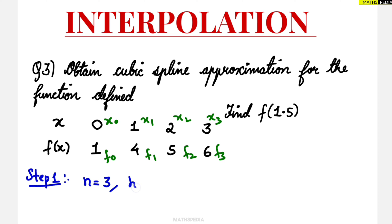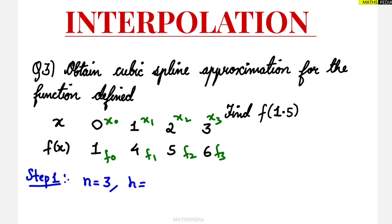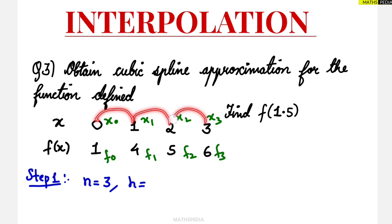Now, what is the h value? h is the interval width. The intervals are 0 to 1, 1 to 2, and 2 to 3 — so 3 intervals for 4 points. The gap between each interval is 1, since 1 minus 0, 2 minus 1, and 3 minus 2 all equal 1. So h equals 1.